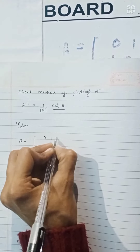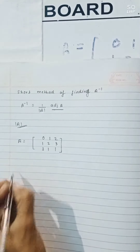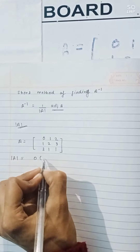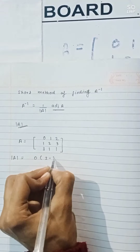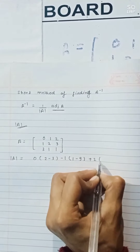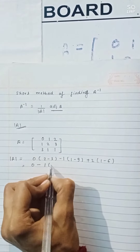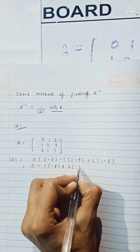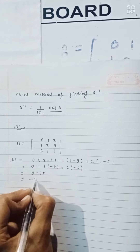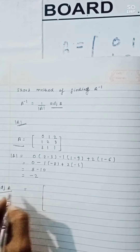Let us take a question. A is equal to the matrix: row 1 is [0, 1, 2], row 2 is [1, 2, 3], row 3 is [3, 1, 1]. We find out mod of A, which equals 0(2 minus 3) minus 1(1 minus 9) plus 2(1 minus 6), giving 0 minus 1 minus 8 plus 2, that is 8 minus 10, which equals minus 2.